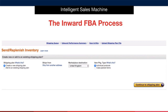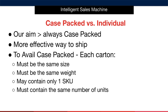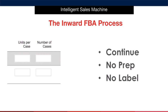Once you have these entered and selected, you can continue to the shipping plan. To re-emphasize: your aim is to have case packed cartons — it is a hugely more effective way to ship. To use case packed cartons, your products must be the same size, the same weight, contain only one SKU, and have the same number of units in every carton. When you select case packed items, you must inform Amazon of how many units are in a single case and how many cases you are shipping. Simply enter your numbers and then continue.